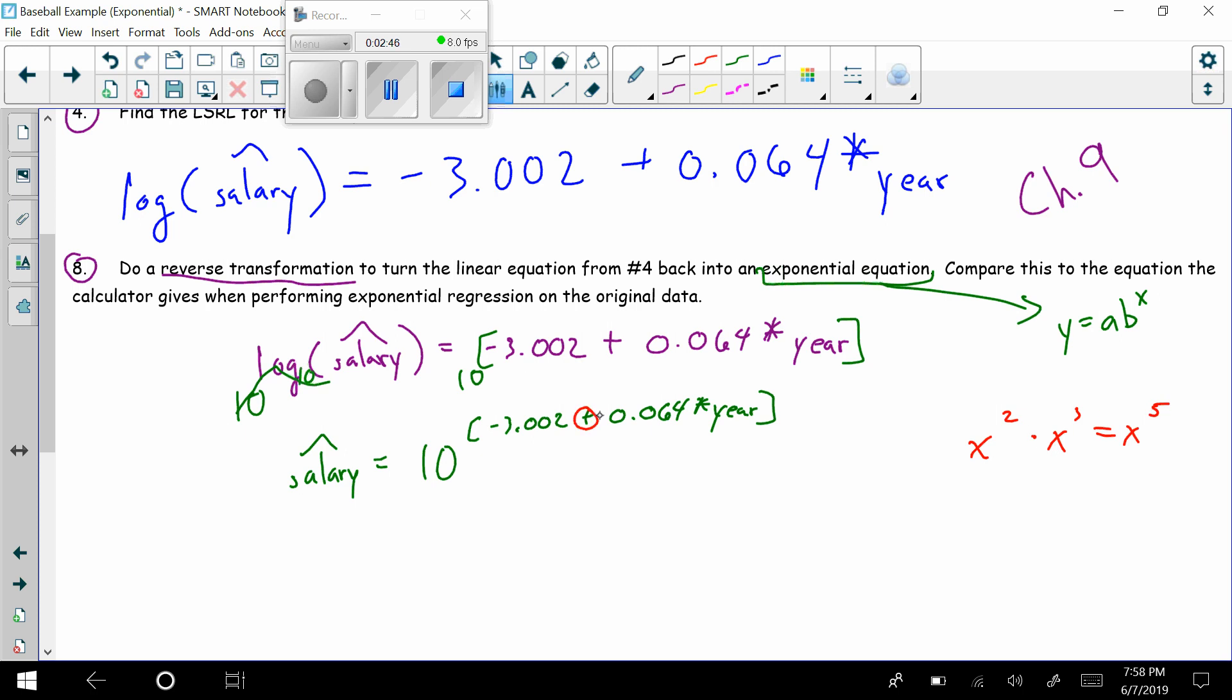Well here you can see that there's an addition, which means I can actually break up 10^(-3.002) × 10^(0.064 × year). Okay, like that should follow from this little tiny example over here.